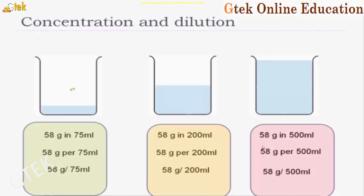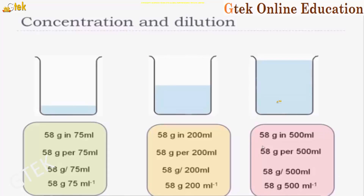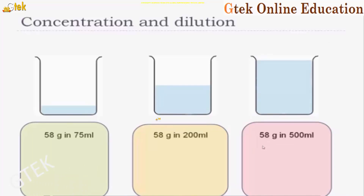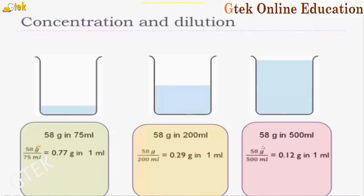This indicates that the 75 ml solution has more concentration — more salt — compared to the more dilute ones. So 58 grams in 75 ml can be denoted as 58 g·ml⁻¹, which gives 0.77 grams per ml. The 200 ml solution gives 0.29 grams per ml, and the 500 ml solution gives 0.12 grams per ml. This is the concentration of the solute in the liquid.